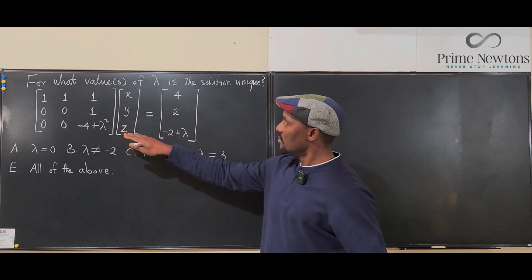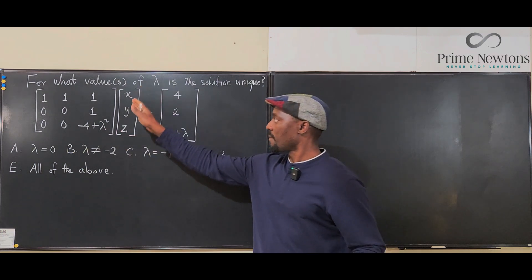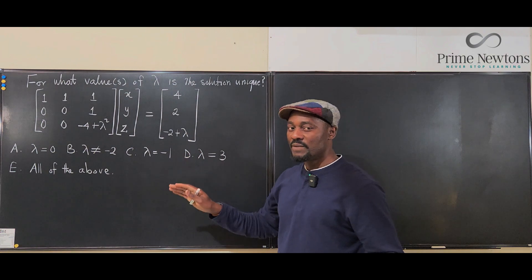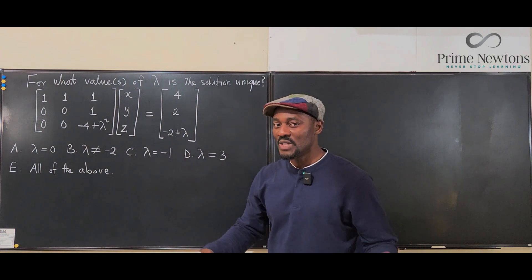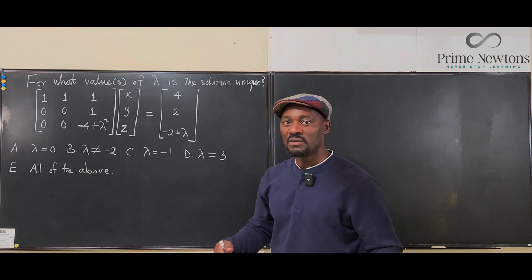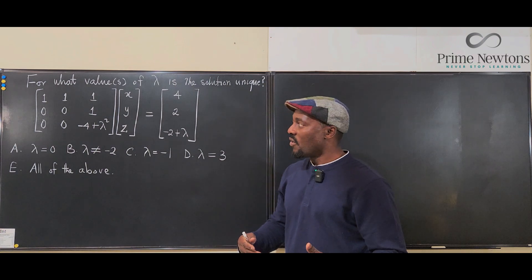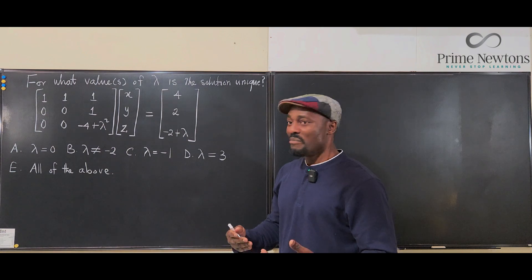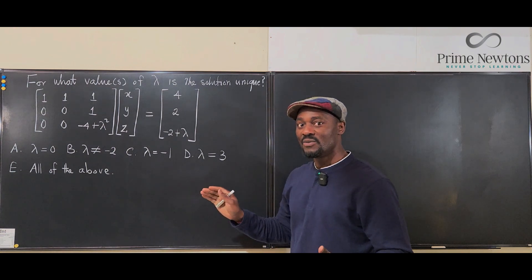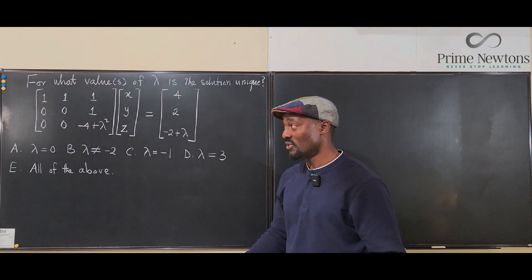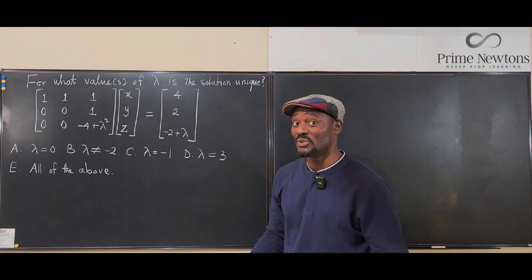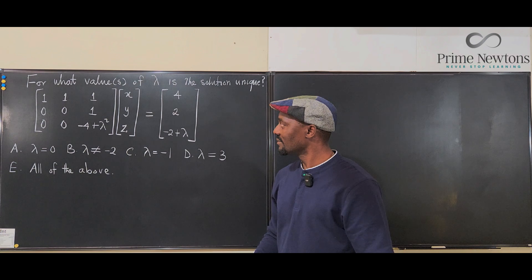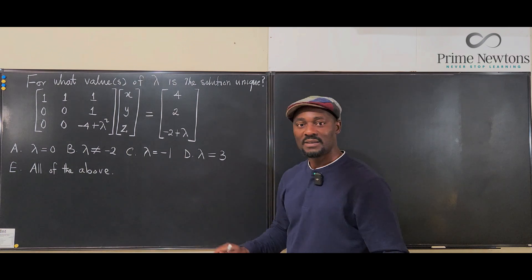You have a matrix multiplying a vector in R3, and the question asks: if there is a unique solution, what would be the value of lambda? The more I looked at the question, the more I knew the answer, but none of the options provided was the correct solution. Every way I look at it, none of these is the correct answer.